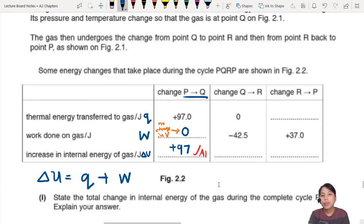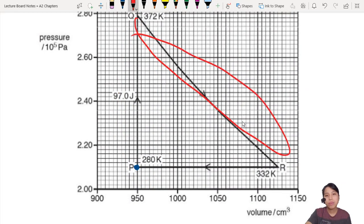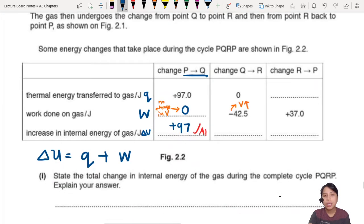Let's move on. Q to R. No thermal energy transfer, but there is work done. Negative means what? Negative means your gas is expanding. So volume is increasing. So let's look at Q to R. So that is now this section. Volume increasing, pressure changing.